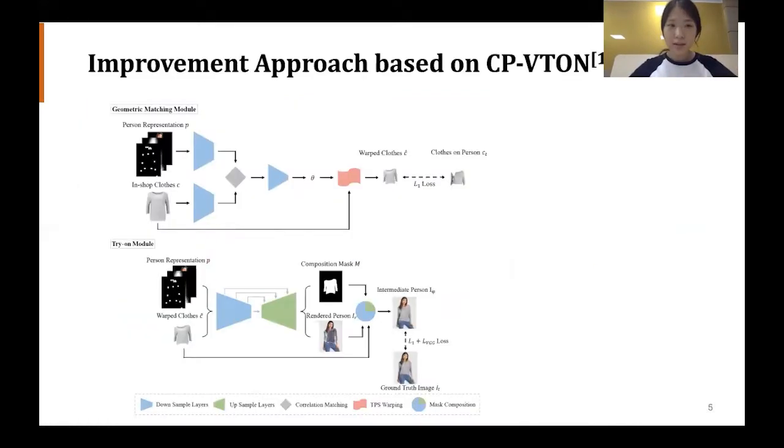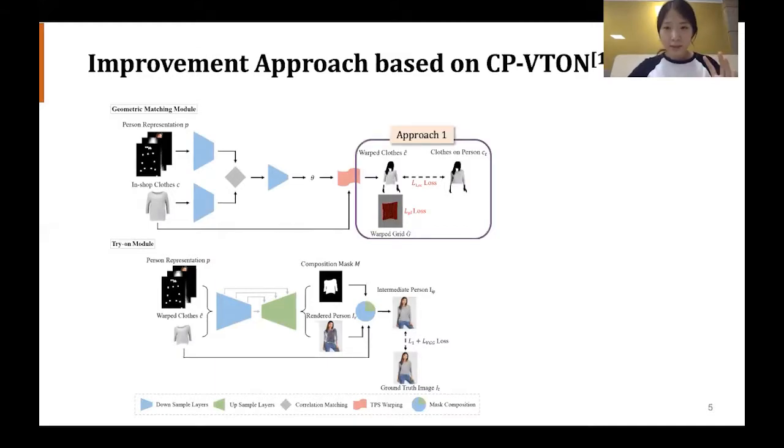Now let's look at the visualized result of our improvement on CPVTON. Look at the first approach. We modified the loss concept to apply the additional two concepts, grid distortion and occlusion.